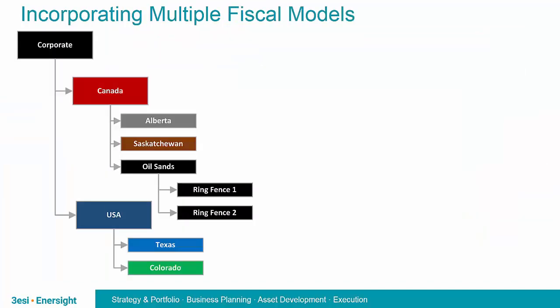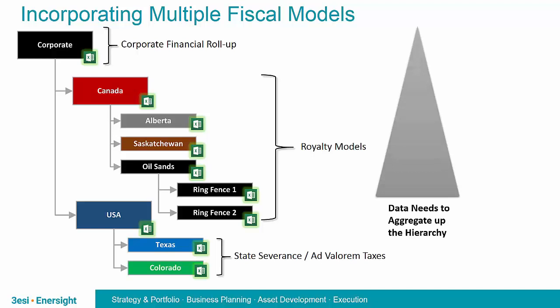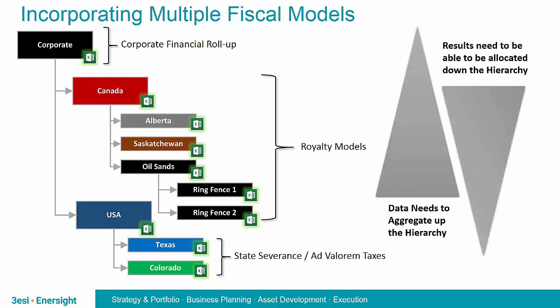There are other important considerations around where and how the Excel models will be used according to your corporate hierarchy. There's value and a need at all levels — from assets all the way up through corporate. At a jurisdiction level, such as individual states or provinces, we need calculations. Ad valorem and severance taxes in states is a perfect example. Royalty models — whether a tax royalty model, a ring fence, or countrywide — need to be applied as appropriate. At the corporate level, we need to consider the challenge of rolling up across different jurisdictions that do not share the same detailed characteristics, and the introduction of financial calculations potentially introducing corporate concepts like debt, which did not exist at a lower level. Data needs to aggregate up, while at the same time results will need to be allocated back down the hierarchy.